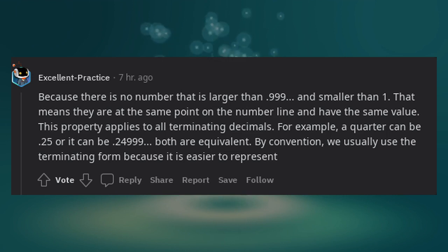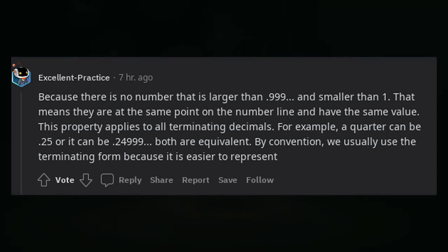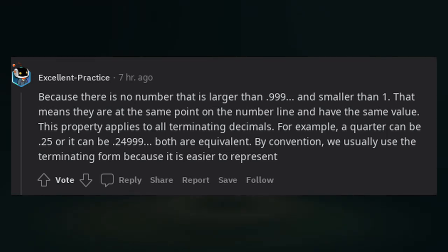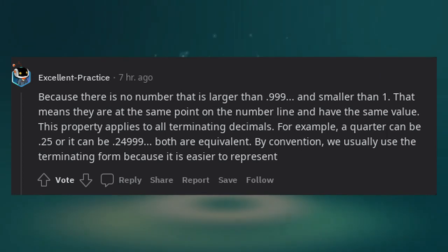For example, a quarter can be 0.25 or it can be 0.24999 repeating. Both are equivalent. By convention, we usually use the terminating form because it is easier to represent.